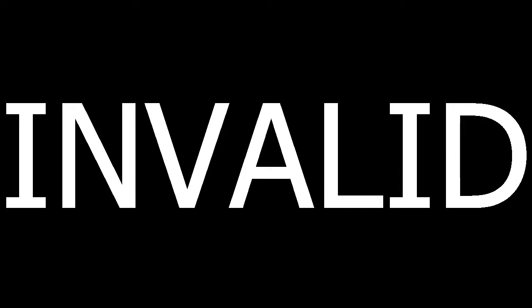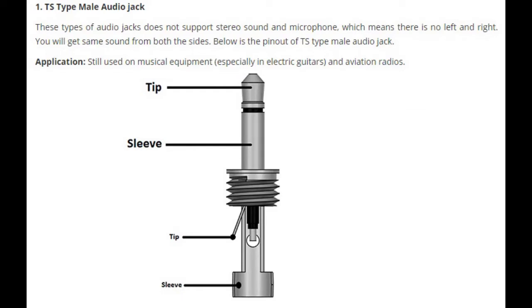We have the standard connections available. I have two types of connectors I use from my headphones — one is standard TRS and one is TRRS. I have given a diagram in the description. The first type has one tip and one sleeve, which is used for musical instruments, guitars, and aviation instruments. It is a mono connection supporting a single speaker — if you want left and right, two connectors will be used.